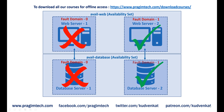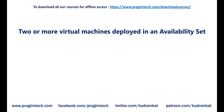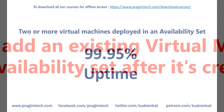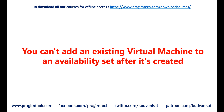Here is the important bit: for all virtual machines that have two or more instances deployed in the same availability set, Microsoft guarantees you'll have virtual machine connectivity to at least one instance at least 99.95% of the time. One important point to keep in mind is that you cannot add an existing virtual machine to an availability set after it is created. So if you want a virtual machine in an availability set, it's a decision you have to make at the time of creation, not after.